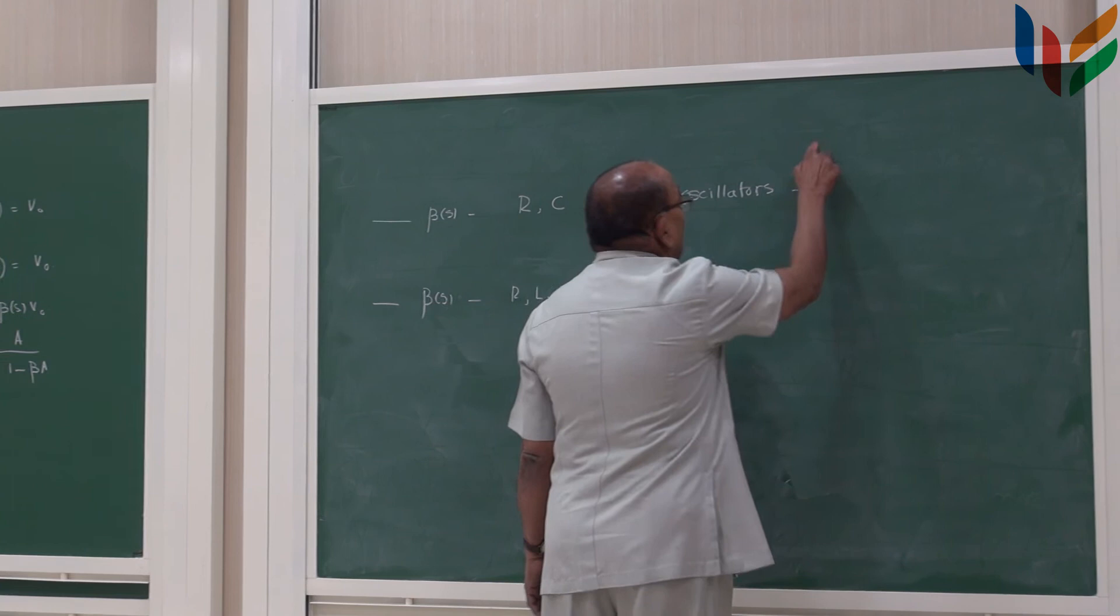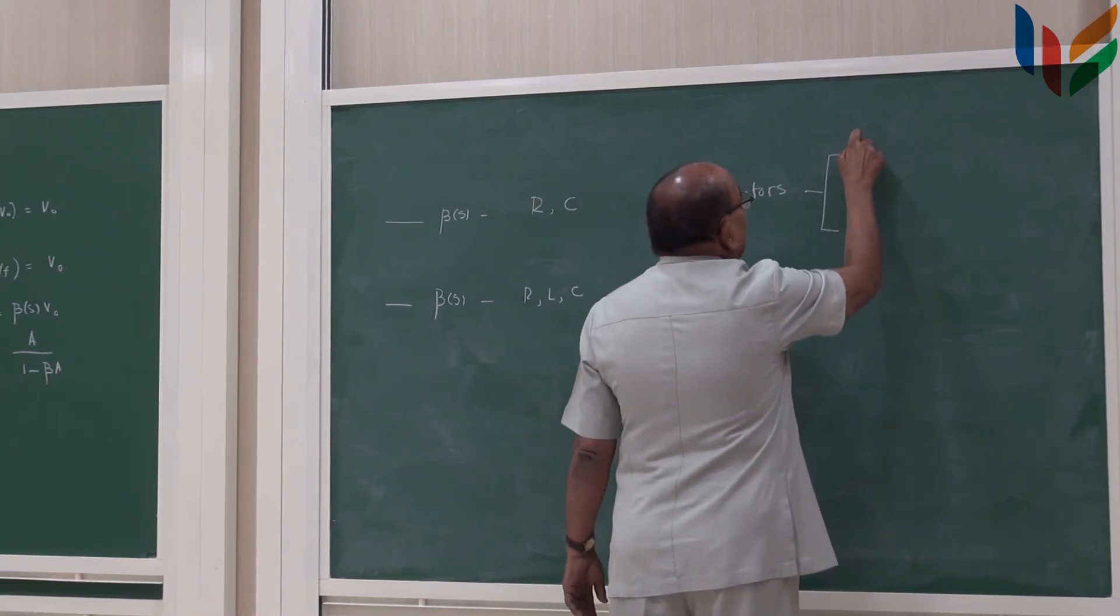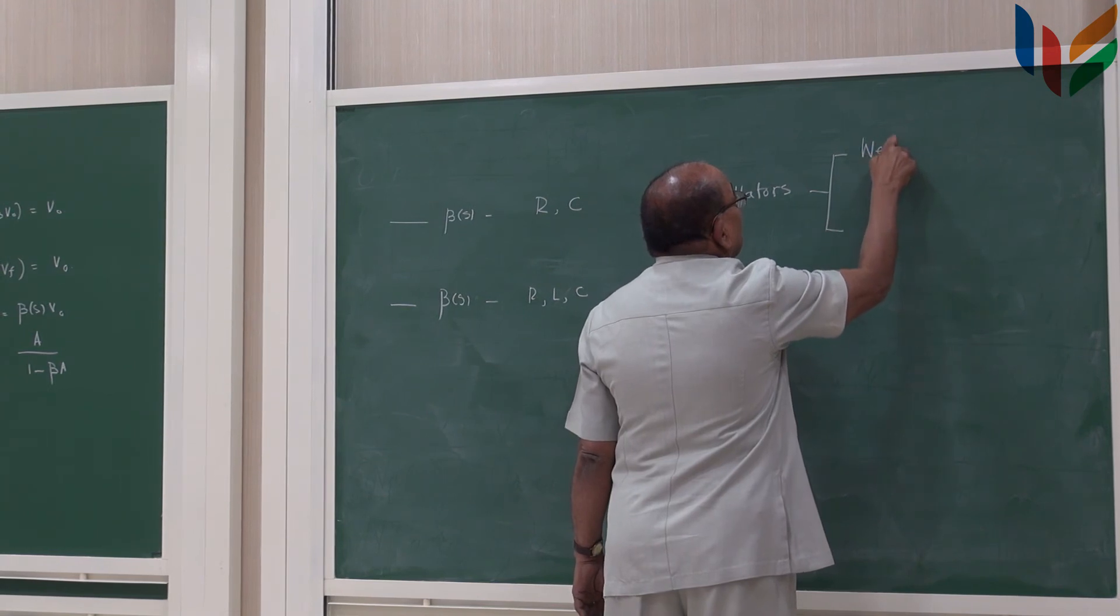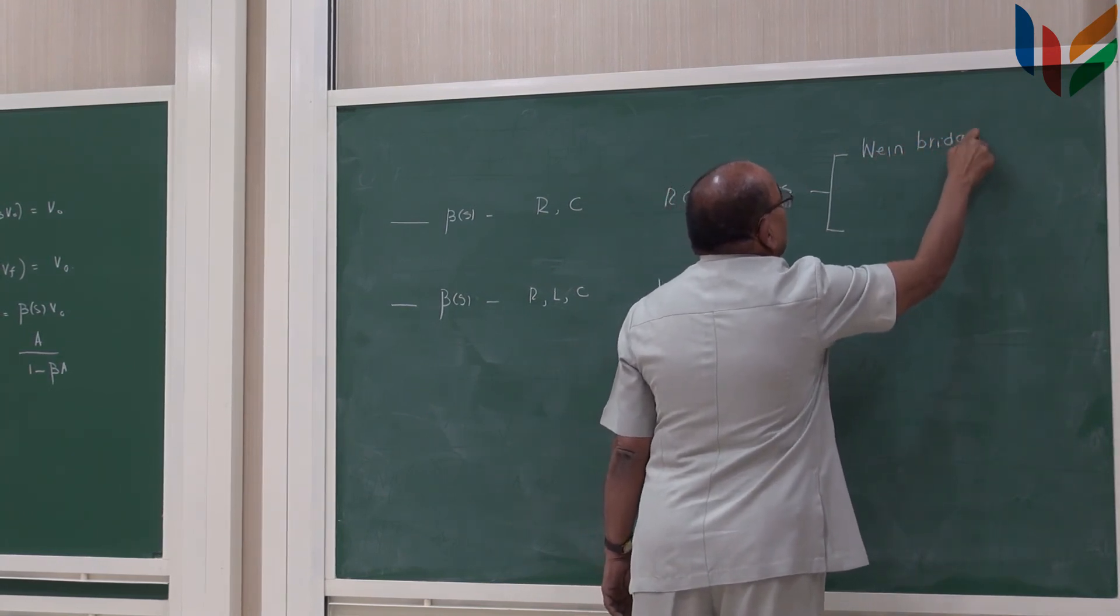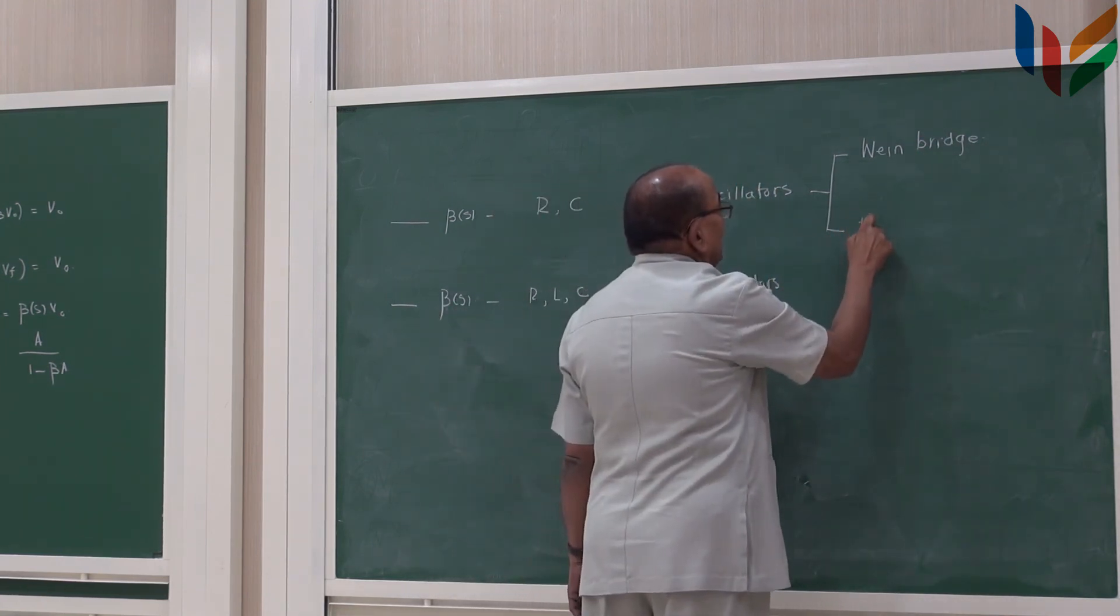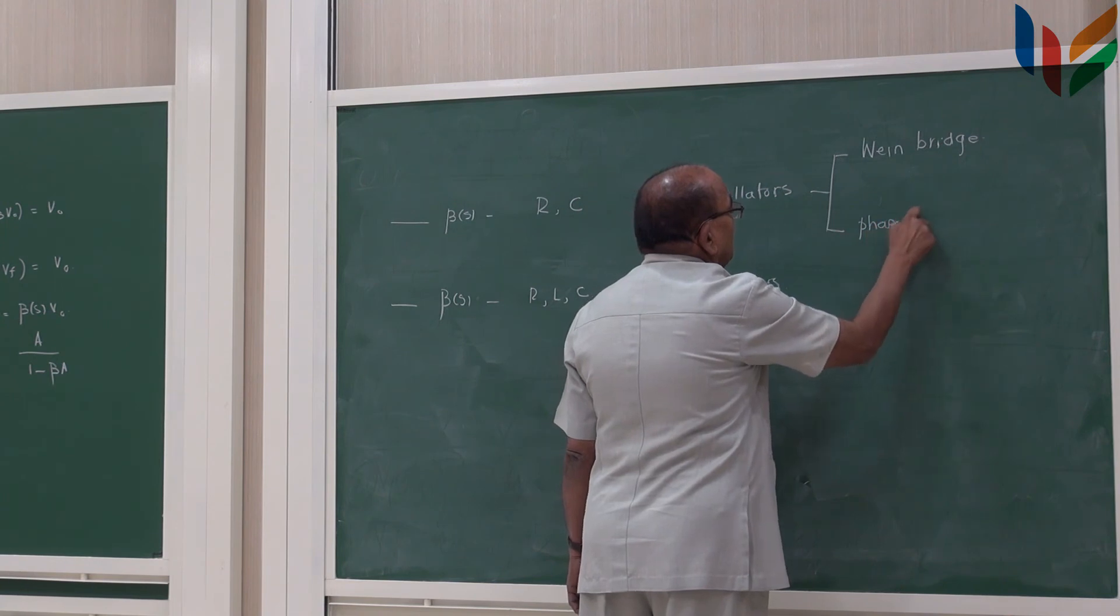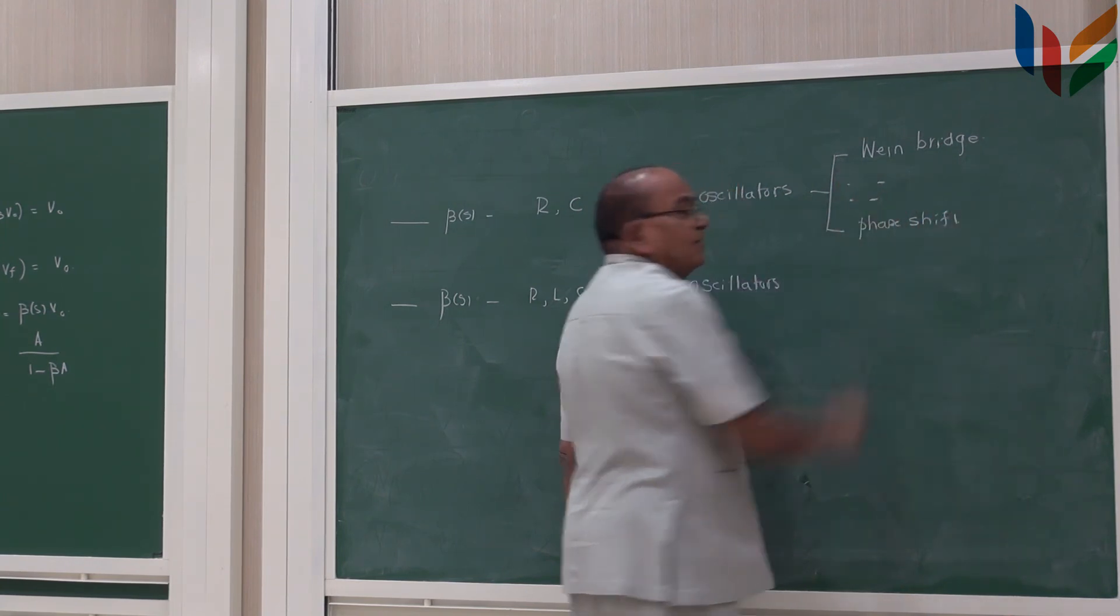However, the common RC oscillators are Wien bridge oscillators and the other one is called the phase shift oscillator. And you can think about many other oscillators.